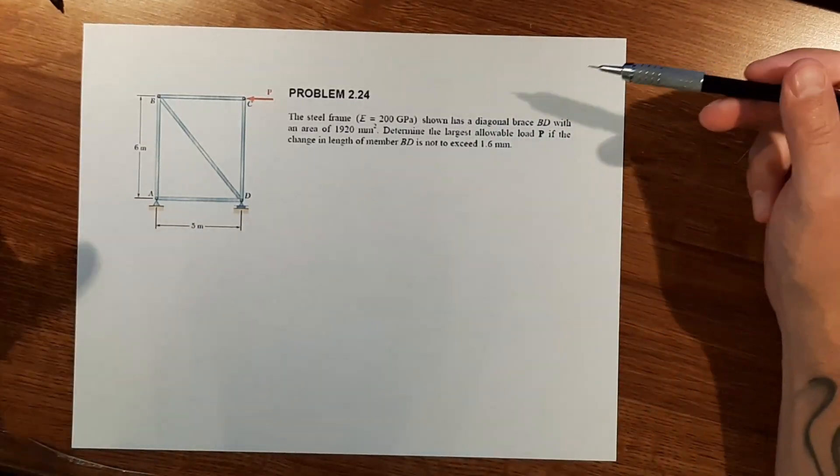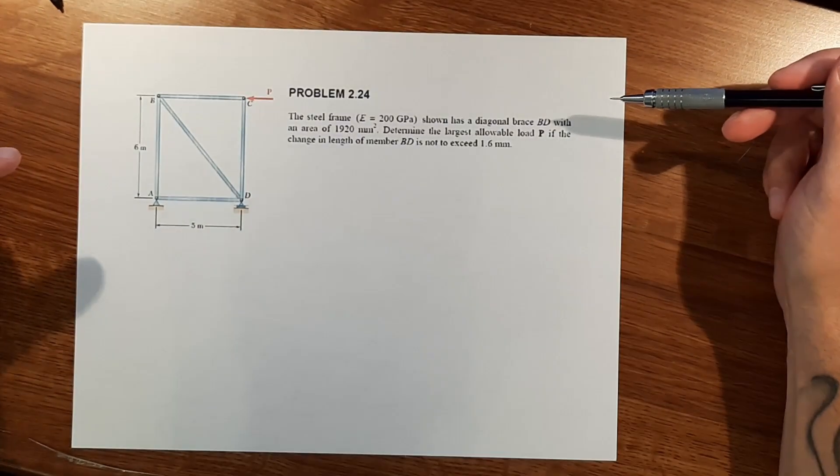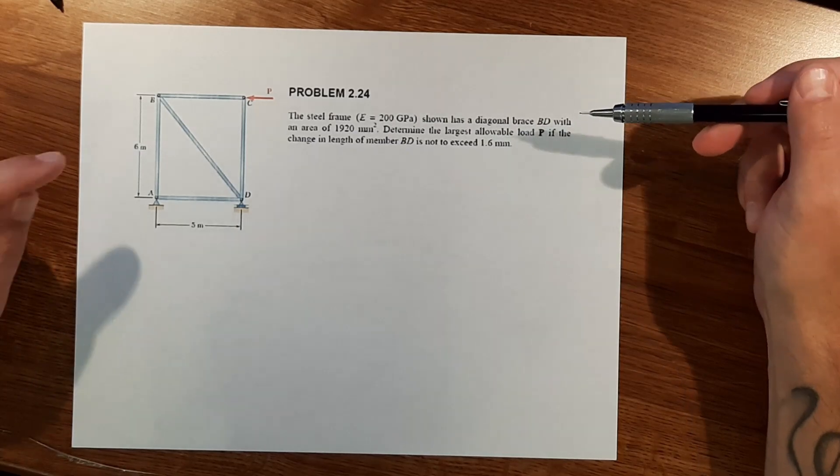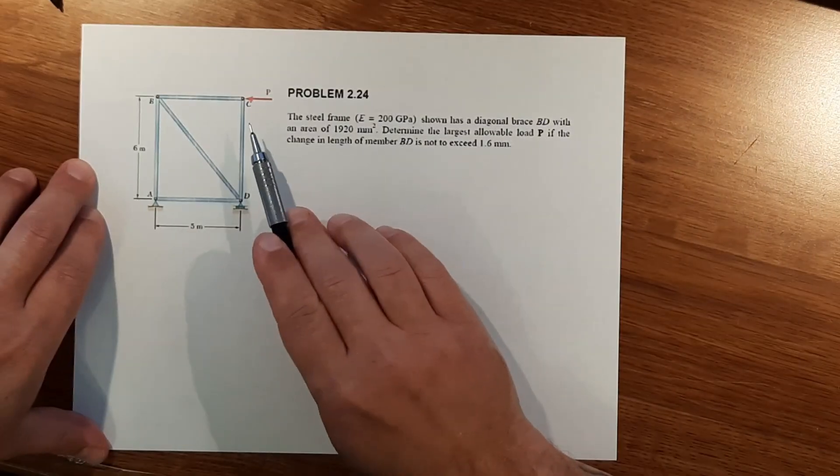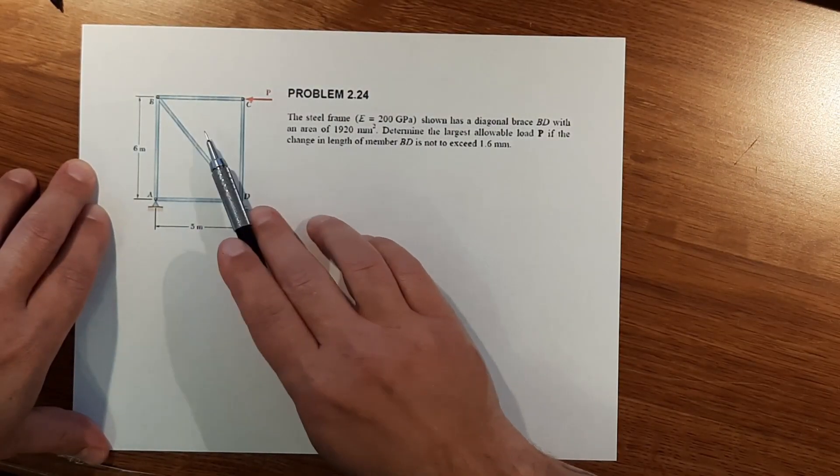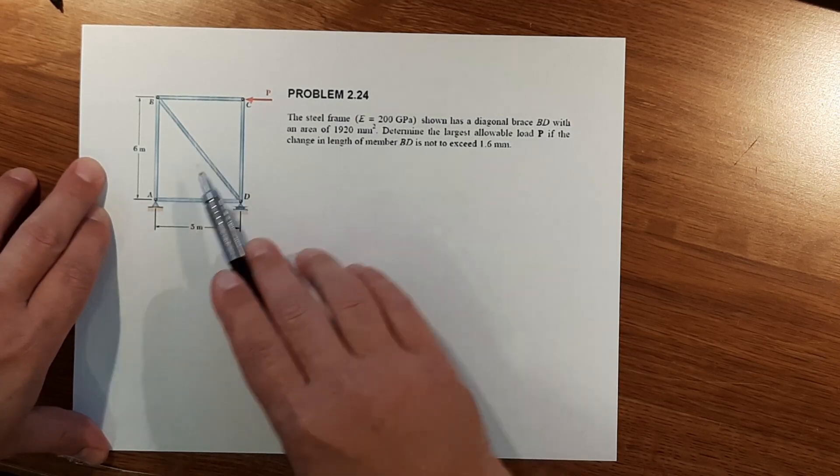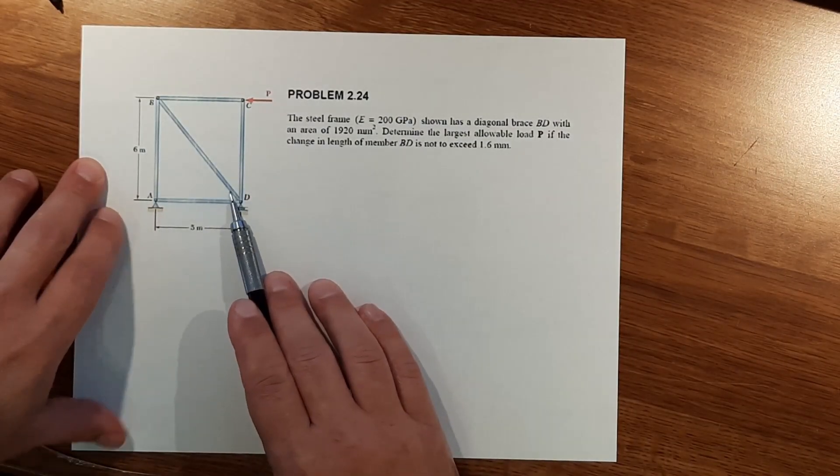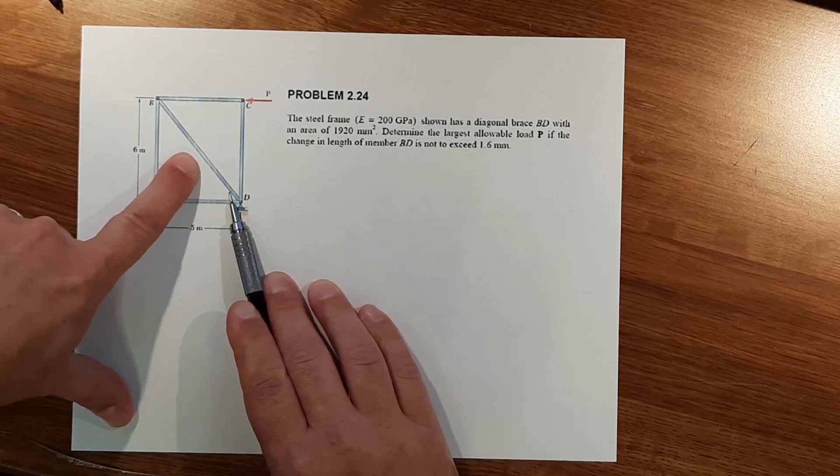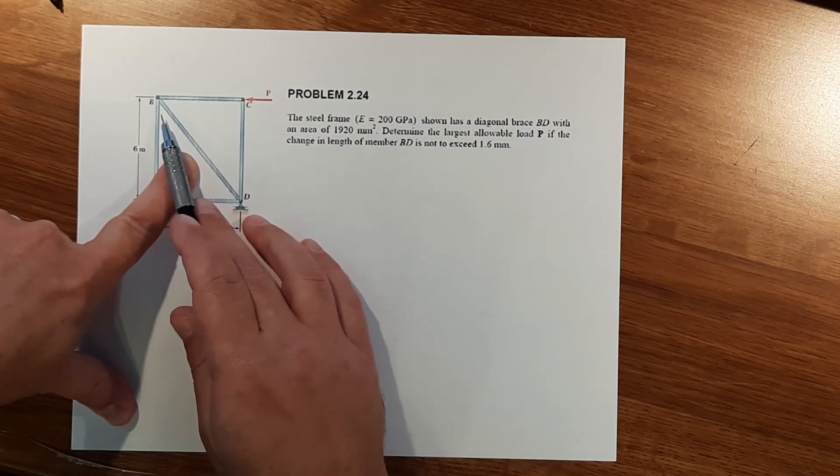What's going on everybody? Today we are going to be solving the largest allowable load P that we can put on this truss member without exceeding a change in length of 1.6 millimeters in member BD.